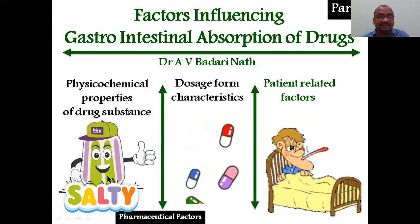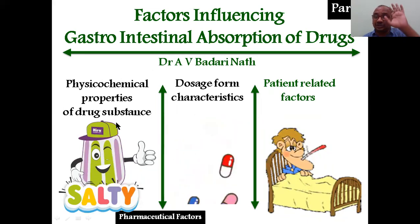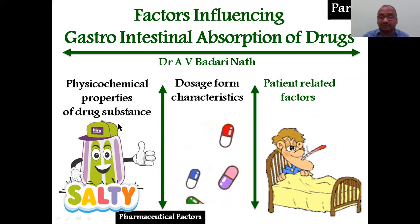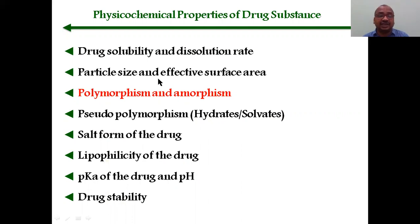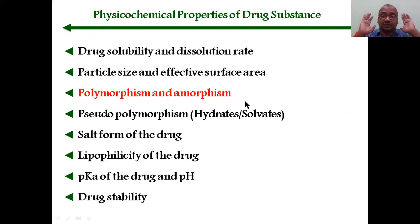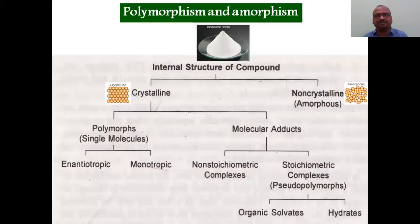In physical-chemical properties, there are a total of eight factors. I have already completed the first and second. In this video I will cover the red-ink highlighted point — polymorphism and amorphism.